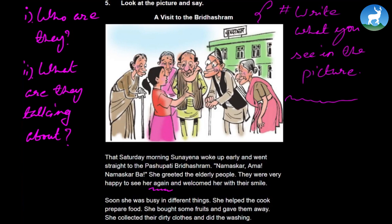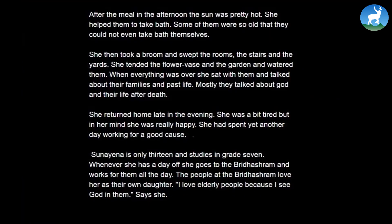Soon she was busy in different things. She helped the cook prepare food. She bought some fruits and gave them away. She collected their dirty clothes and did the washing. After the meal in the afternoon, the sun was pretty hot. She helped them to take baths. Some of them were so old that they could not even take baths themselves. She then took a broom and swept the rooms, the stairs, and the yards. She tended the flower vase and the garden and watered them. When everything was over, she sat with them and talked about their families and past life. Mostly, they talked about God and their life after death. This is what perhaps elderly people talk about most of the time.